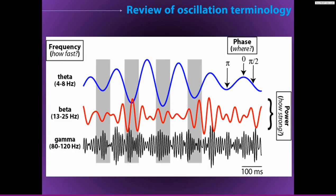Just by way of quick reminder, there are three characteristics — three features — of oscillations. We have the frequency, how fast they cycle; the phase angle time series, that is the position along the sine wave; and the power, or the strength of the oscillation, as measured by the analytic envelope, which you can picture as being like a blanket that we lay on top of these fluctuations.